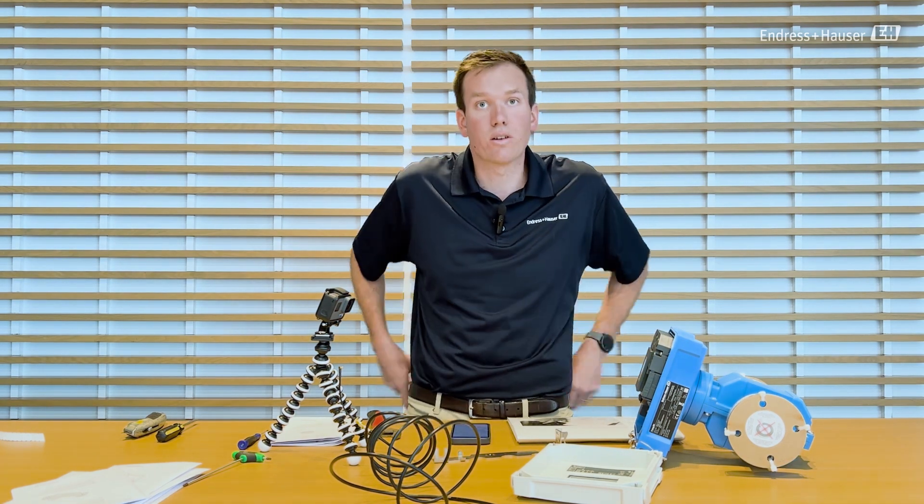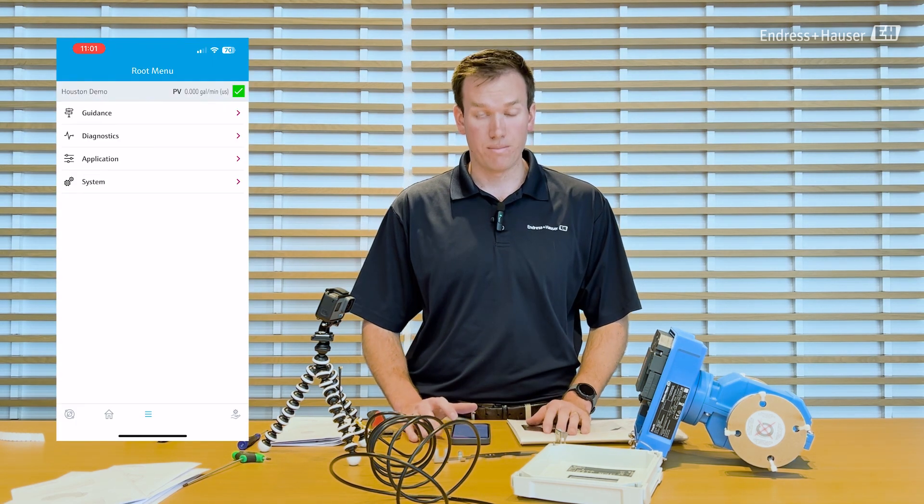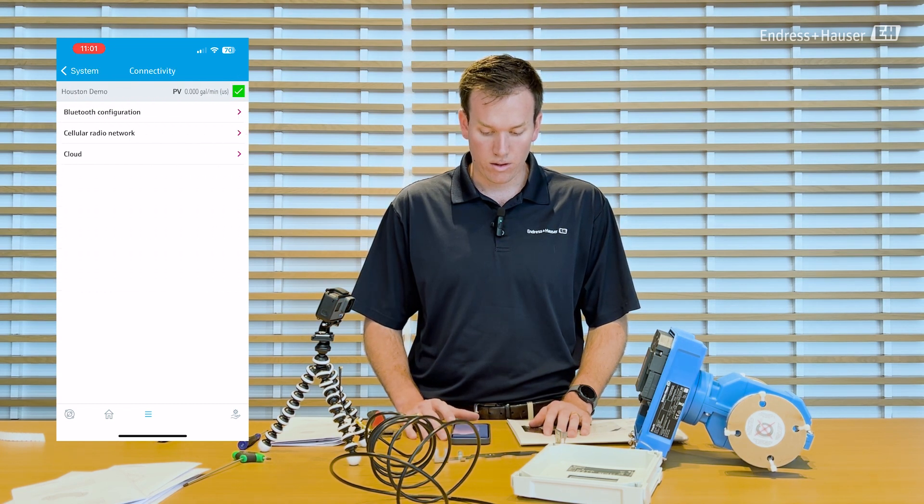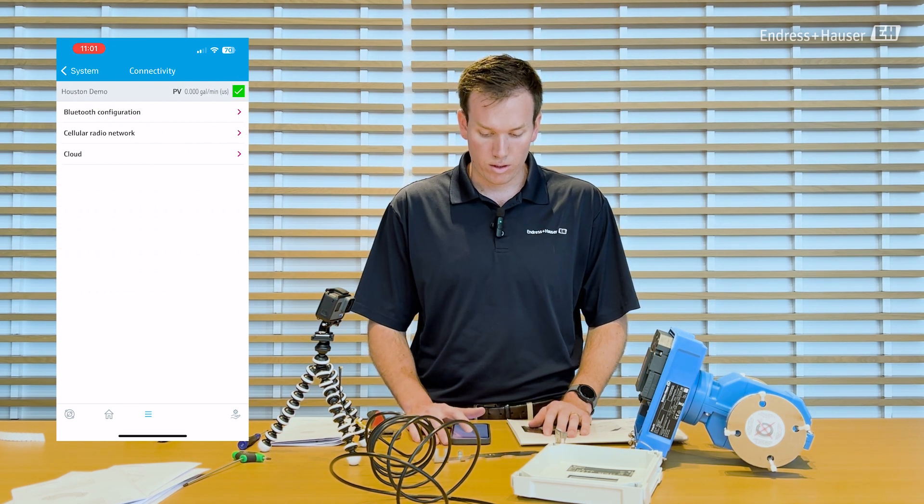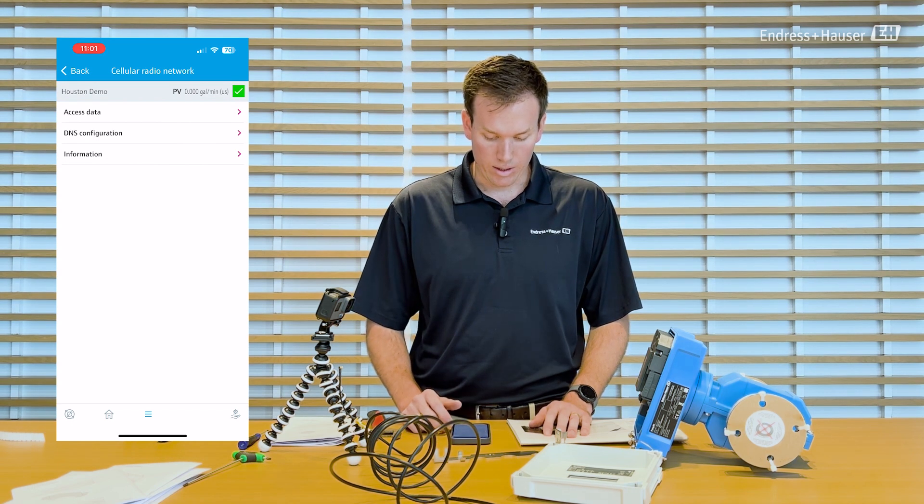Next thing I want to do is check the cellular network connection. So I go to settings, system, connectivity, cellular, radio network, and information.